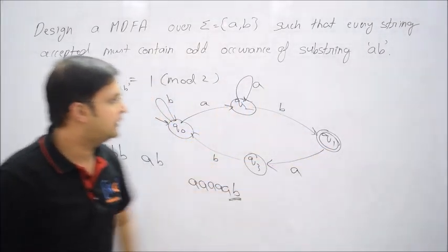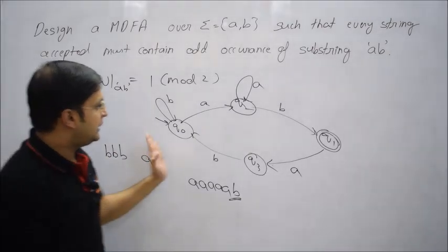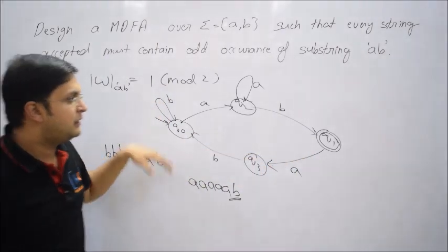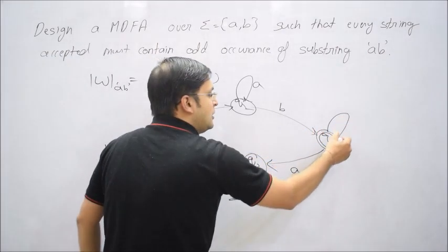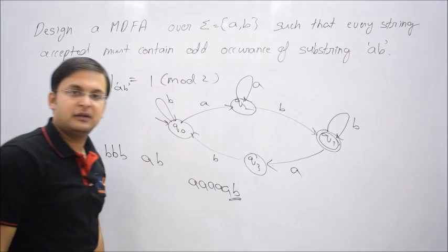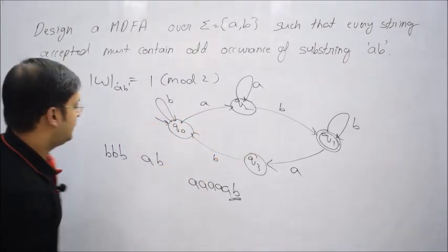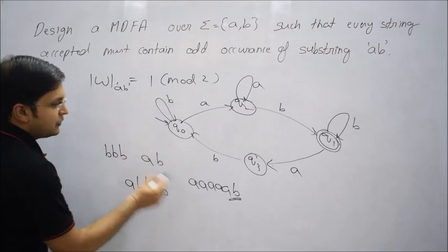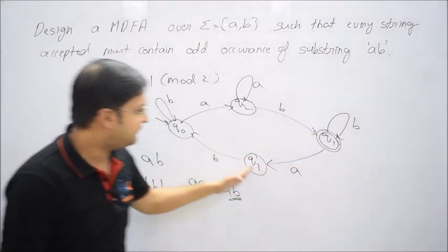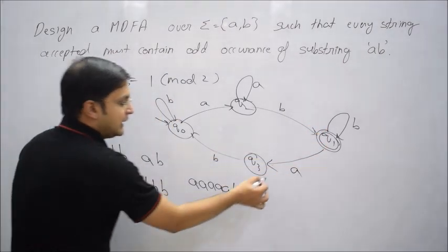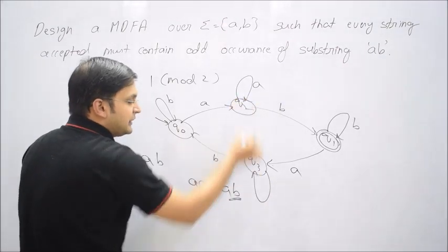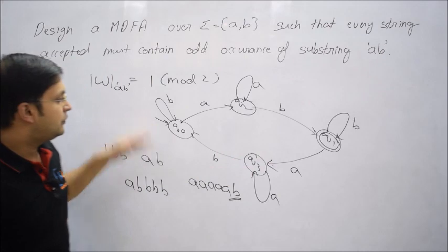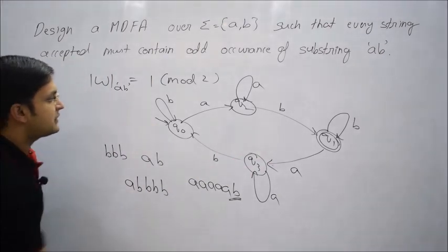Then I will go to Q1, which is acceptable. If you have completed one AB, again you want to go for next AB. So even after B, no matter how many B comes, we can loop on Q1. If A comes, you come here. If after A, analogous to this logic, if A comes, I can loop and then I will go here. I think now the system is complete.